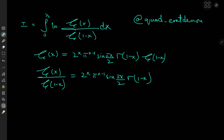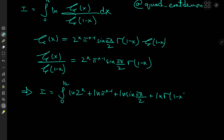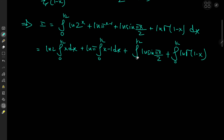All we need to do now is take the logarithm and integrate from 0 to 1/2. So the target integral I becomes the integral from 0 to 1/2 of [log(2^x) + log(π^(x−1)) + log(sin(πx/2)) + log(Γ(1−x))] dx. Invoking linearity, this splits into: log 2 · ∫₀^(1/2) x dx + log π · ∫₀^(1/2) (x−1) dx + ∫₀^(1/2) log(sin(πx/2)) dx + ∫₀^(1/2) log(Γ(1−x)) dx. I'll call the third piece I₁ and the fourth piece I₂.